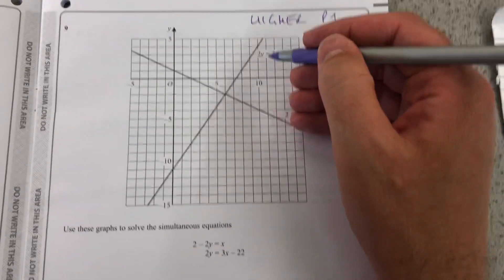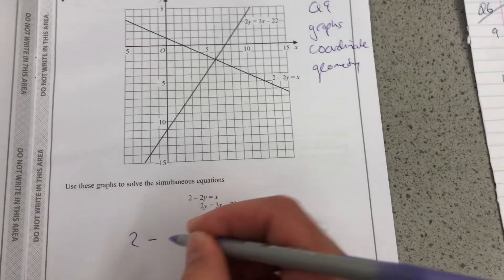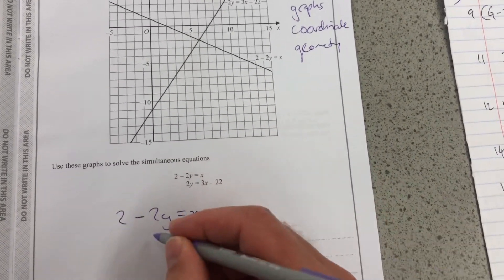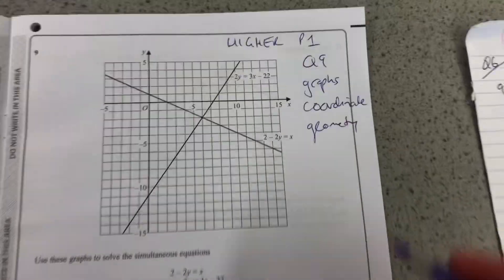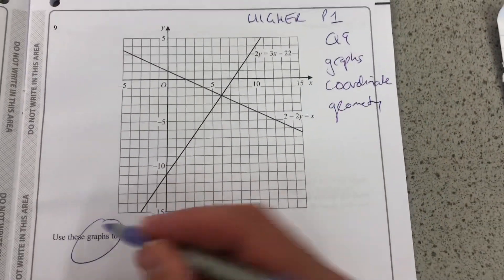We're going to use the graph to solve the simultaneous equations, and they're written here: 2 minus 2y equals x, and 2y equals 3x minus 22. So it's just worth one mark. All you have to do is use the graph to solve it.